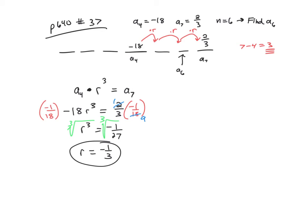Okay, so now my job is to find a sub 6. Well using the same kind of thinking that we did there, if I start with a sub 4, I'm going to multiply by r squared, and that should give me a sub 6.